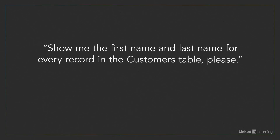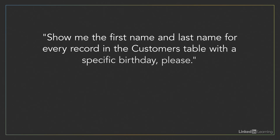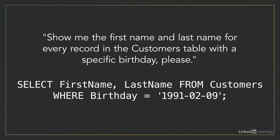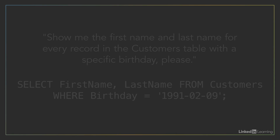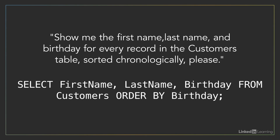To ask for data from a database, we'll ask for the fields we want information from, and we'll specify the tables that contain the information. We might also specify how to display, sort, or associate the information. And in return, we'll get matching records, or the fields from records which match our criteria. This statement, for example, will show us the first name and last name of customers with a specific birthdate. And this one would return us a list of customers' names and birthdates, sorted chronologically by birthday.